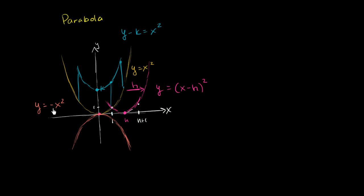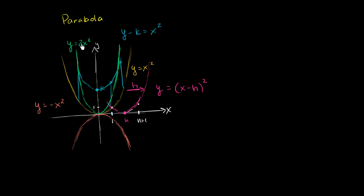Now let's think about scaling. What would y equals 2x squared look like? As we square things we multiply by 2, so it increases faster — it's going to be narrower and steeper. Increasing by a factor makes it increase faster. If we did y equals negative 2x squared, it gets negative faster on either side, so it's a narrower downward-opening parabola — the mirror image of y equals 2x squared.